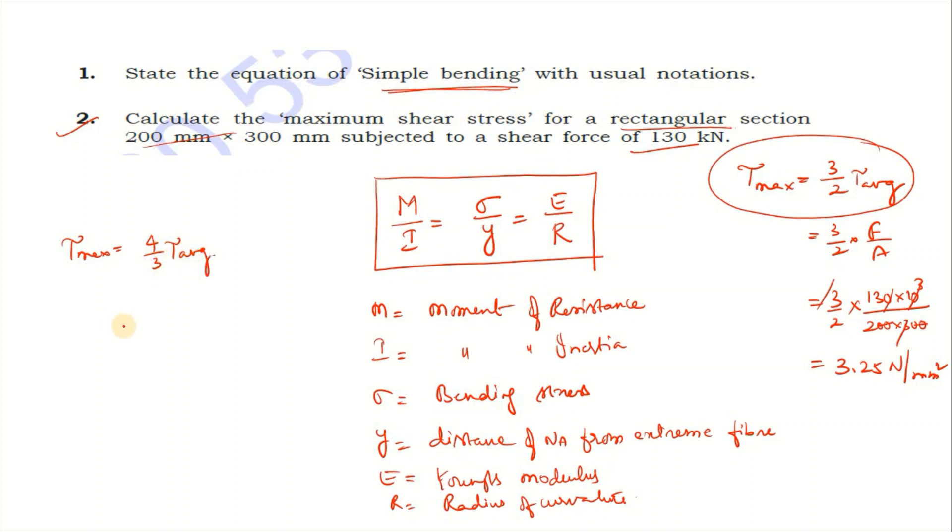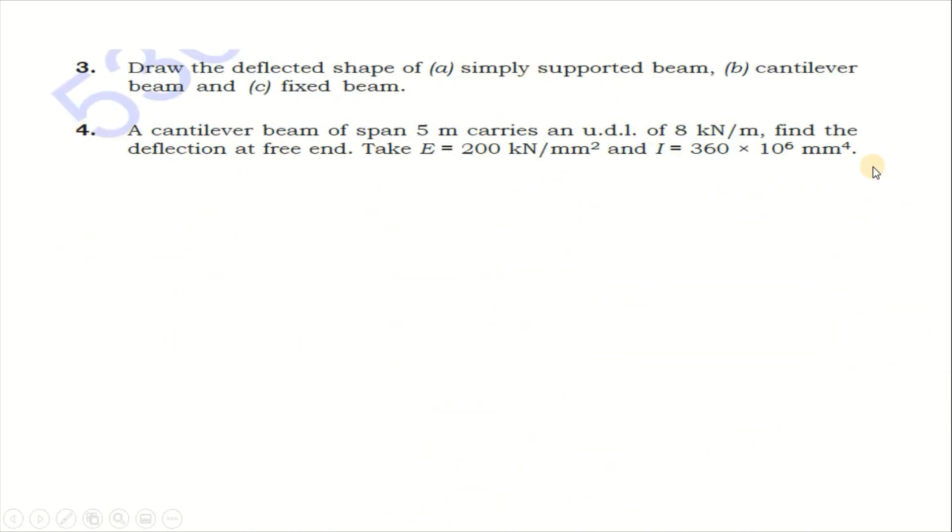Then the tau max formula is 4 by 3 tau average, then 4 by 3 into shear force by area. For circular section it's pi d square by 4. This is a very simple formula, easy 3 marks.